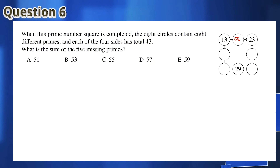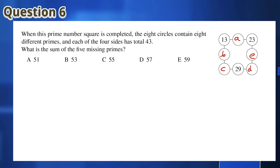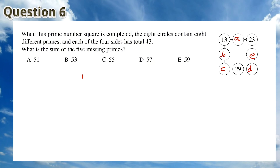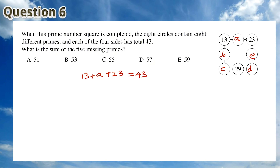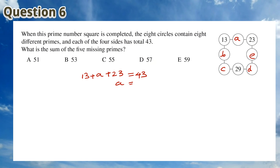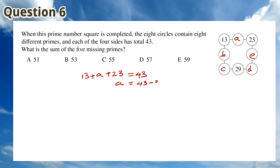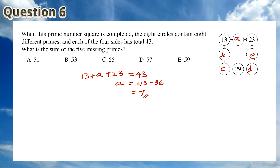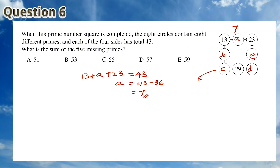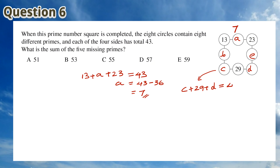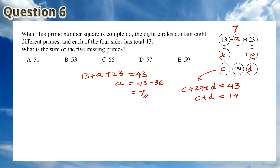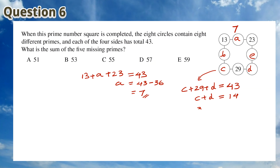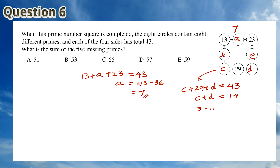For Question 6, we can fill in the blank circles with the letters A, B, C, D and E. You can see in the diagram that 13 plus 23 plus A is equal to 43, which is the given total of each of the four sides. This means that A is equal to 43 minus 36, which is equal to 7. We can get another equation: C plus 29 plus D is equal to 43, which means that C plus D is equal to 14. So C and D are either equal to 3 and 11, or 11 and 3.